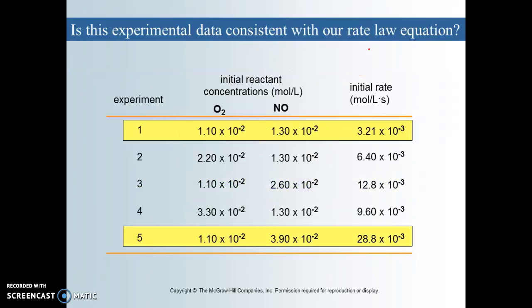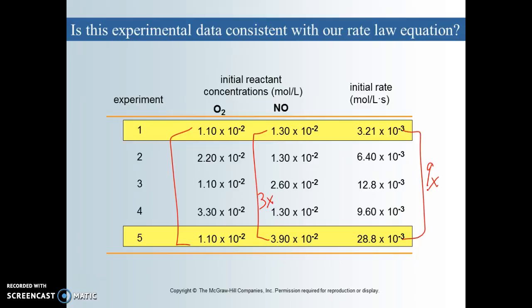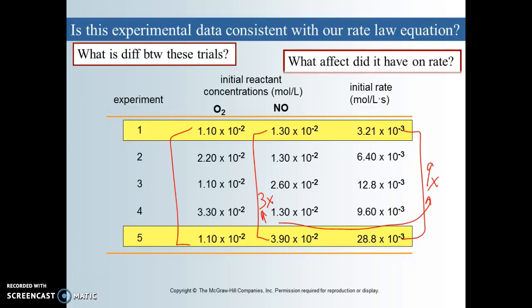To verify, let's look at trial one and trial five. The O2 is the same in both. We can see that we tripled our concentration of NO. What did that do to the rate? It increased by nine times. Yes, it's still consistent — proportional to the square. I increased NO three times, and three squared is nine, so the rate was affected nine times. That verifies that two is the exponent for NO in our rate law.